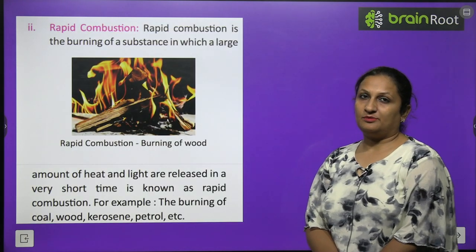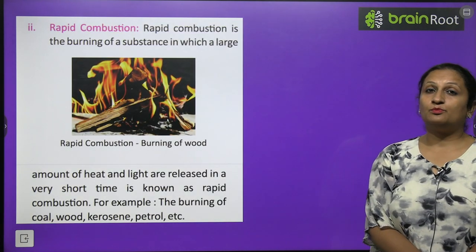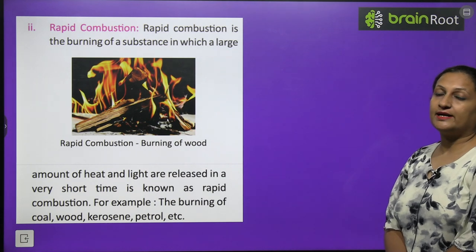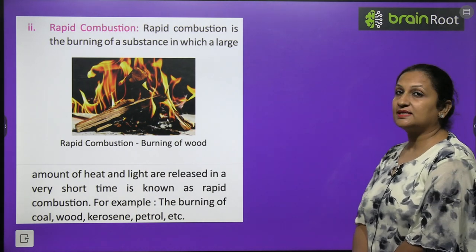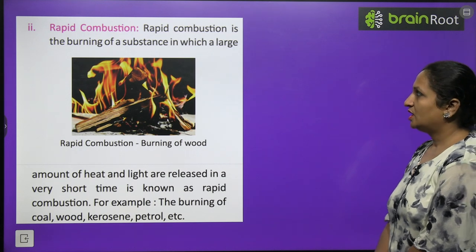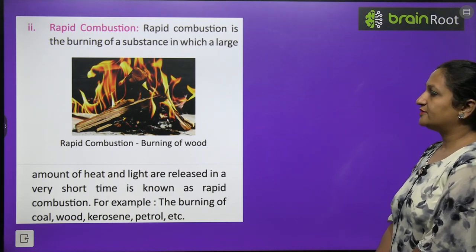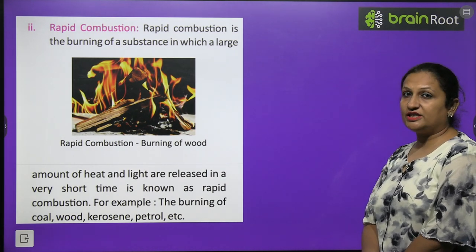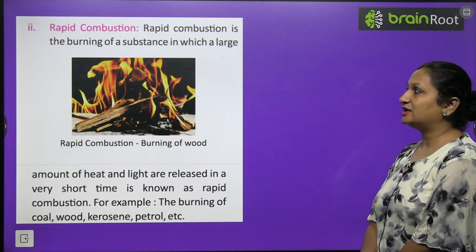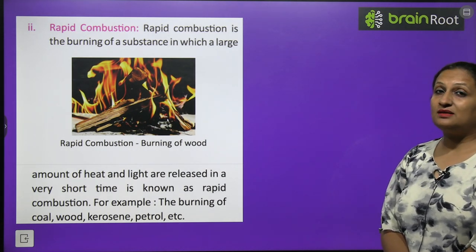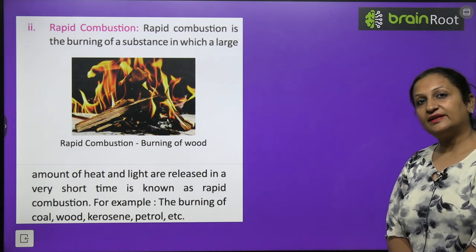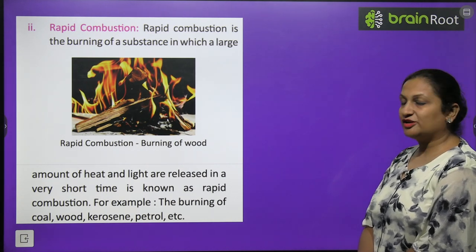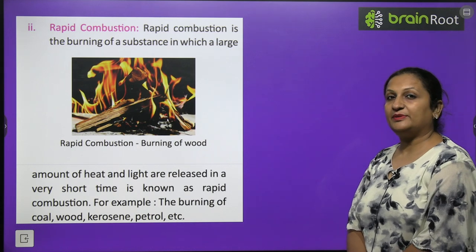Second type is rapid combustion — combustion that happens very quickly, releasing a large amount of heat and light energy in a very short time, making it an exothermic reaction. For example, burning paper burns instantly. The burning of coal, wood, kerosene, and petrol are all examples of rapid combustion.